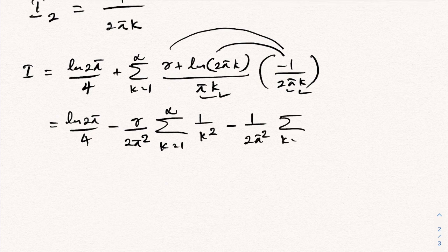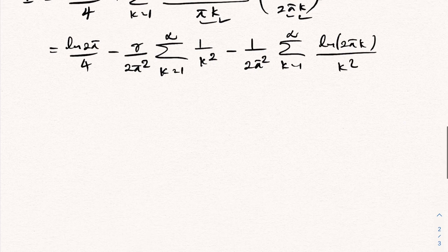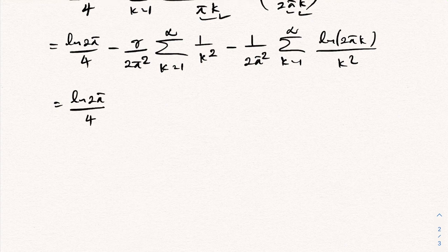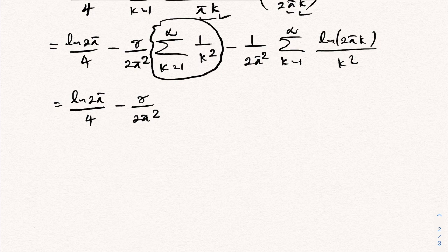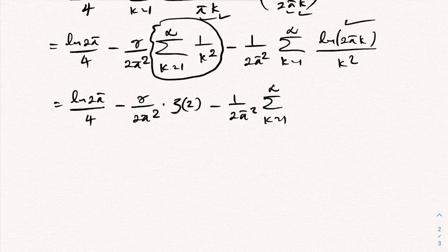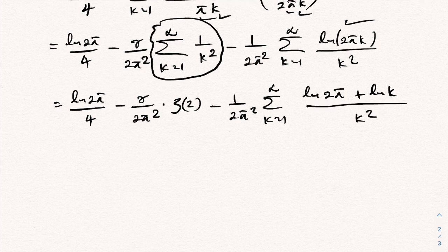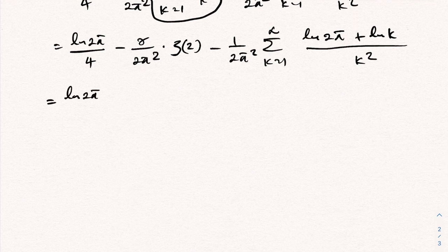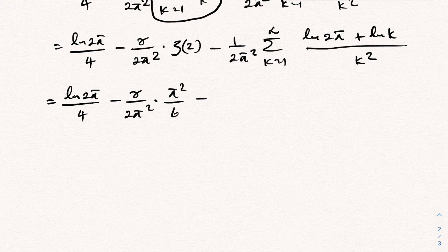Simplifying further: we have ln(2π)/4 minus γ/(2π²) · ζ(2), where the sum Σ(1/k²) equals the Riemann zeta function ζ(2) = π²/6. Also, splitting the log term: Σ(ln(2πk)/k²) = ln(2π)·ζ(2) + Σ(ln(k)/k²).